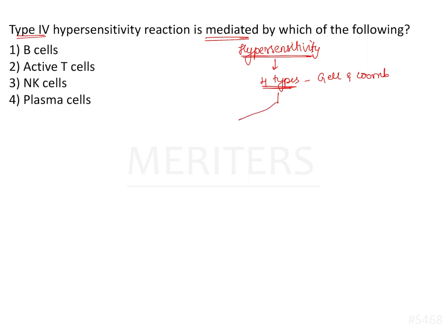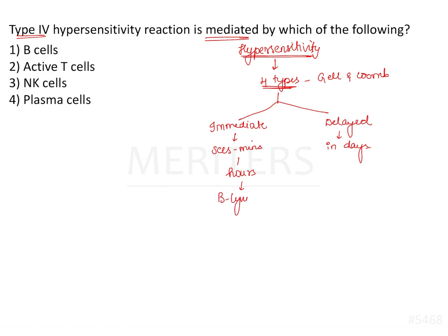Hypersensitivity is broadly classified based on the rapidity and duration of action into immediate and delayed types. Immediate hypersensitivity reactions are elicited within seconds to minutes to few hours, whereas delayed hypersensitivity reactions take days to be manifested. Immediate reactions are mediated by B lymphocytes, which are part of humoral immunity, whereas delayed hypersensitivity reactions involve T lymphocytes, which form an important component of the cell-mediated immune system.